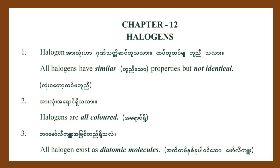All halogens have similar properties, but not identical. All halogen acids are diatomic molecules. Halogen alone is also a diatomic molecule.